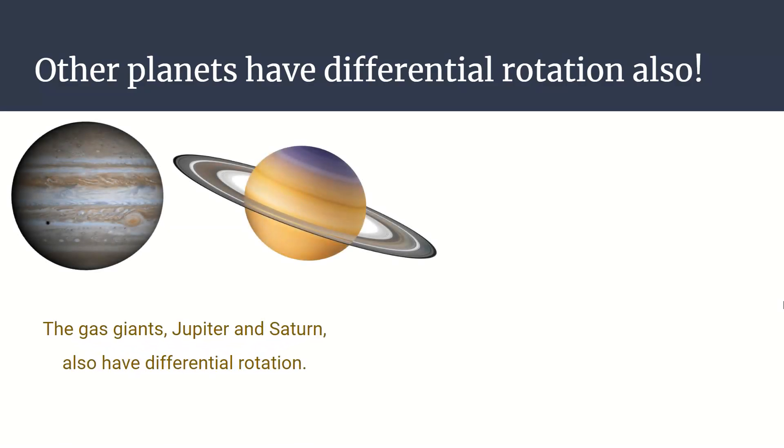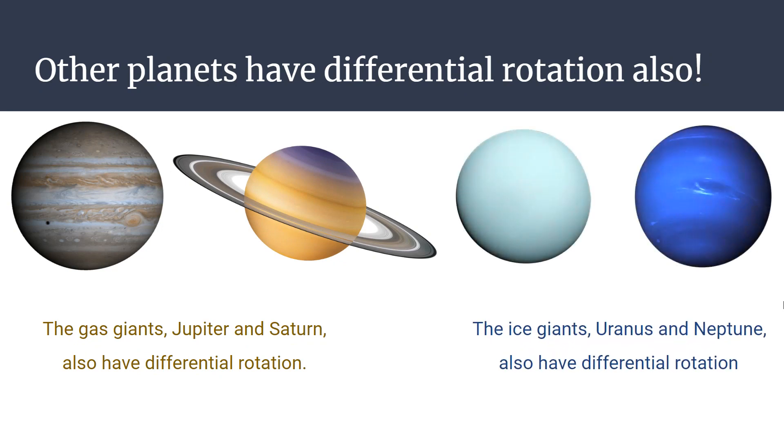Other planets have differential rotations as well, like the gas giants Jupiter and Saturn, and the ice giants Uranus and Neptune.